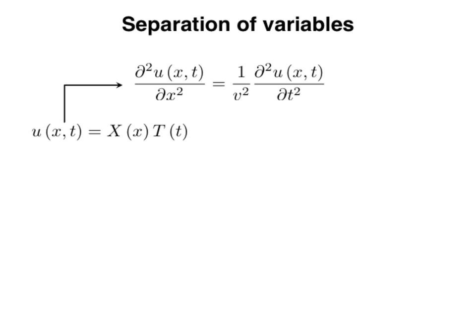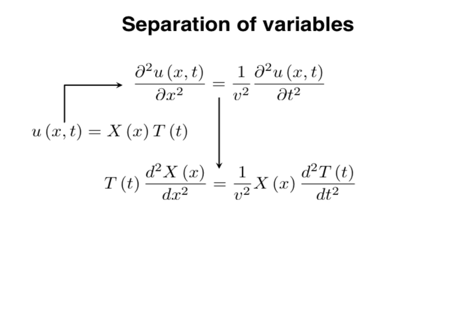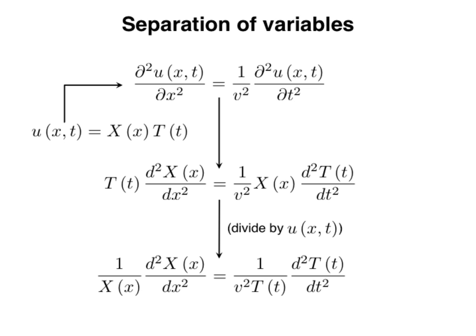We introduce the factorization of u into the wave equation. On the left-hand side, we have the second derivative of u with respect to x. Since capital T does not depend on x, it can be taken outside the differentiation operator, giving us the product of T and the second derivative of X with respect to x. Since capital X does not depend on t, it can be taken outside as well, giving the product of X and the second derivative of T with respect to t. The prefactor 1 over v squared remains unchanged.